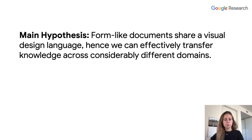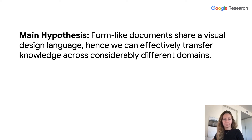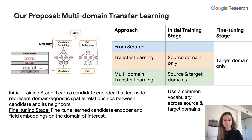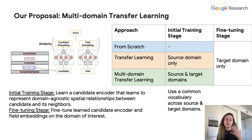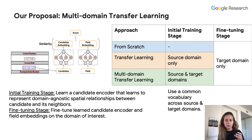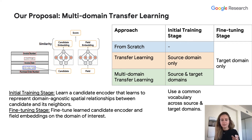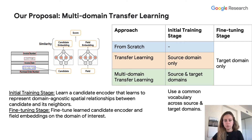Our main hypothesis is that form-like documents share a visual design language, hence we can effectively transfer knowledge across considerably different domains. Our proposal is a simple multi-domain transfer learning approach. We refer to the document type or language with enough labeled examples as the source domain, and the type or language we'd like to generalize to but lack labeled examples for as the target domain. We hypothesize that the candidate encoder can effectively learn to represent domain-agnostic spatial relationships between the candidate and its neighbors.